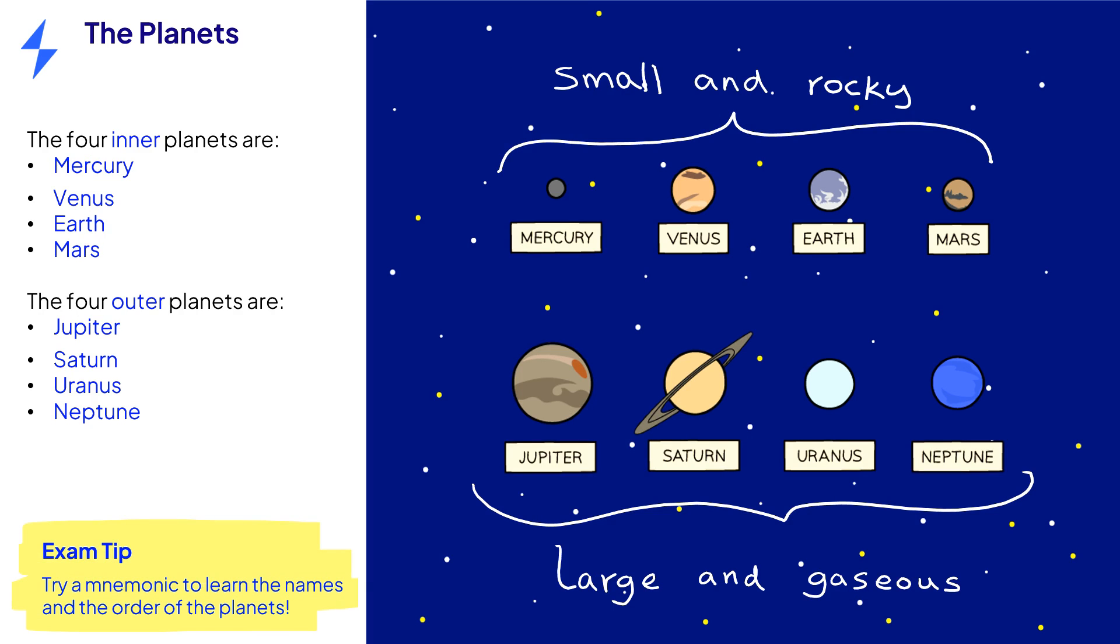If you struggle to remember the order of the planets, it can help to learn a mnemonic such as My very easy method just speeds up naming.